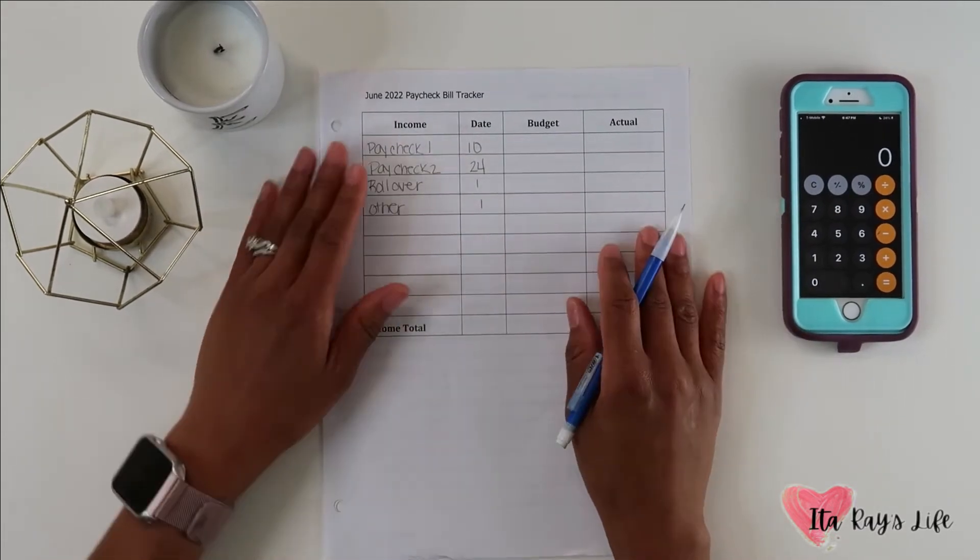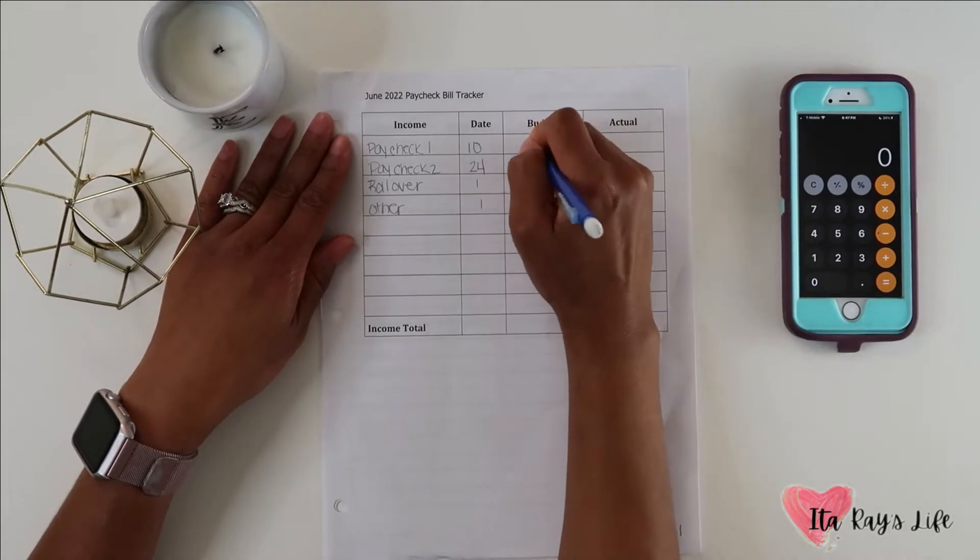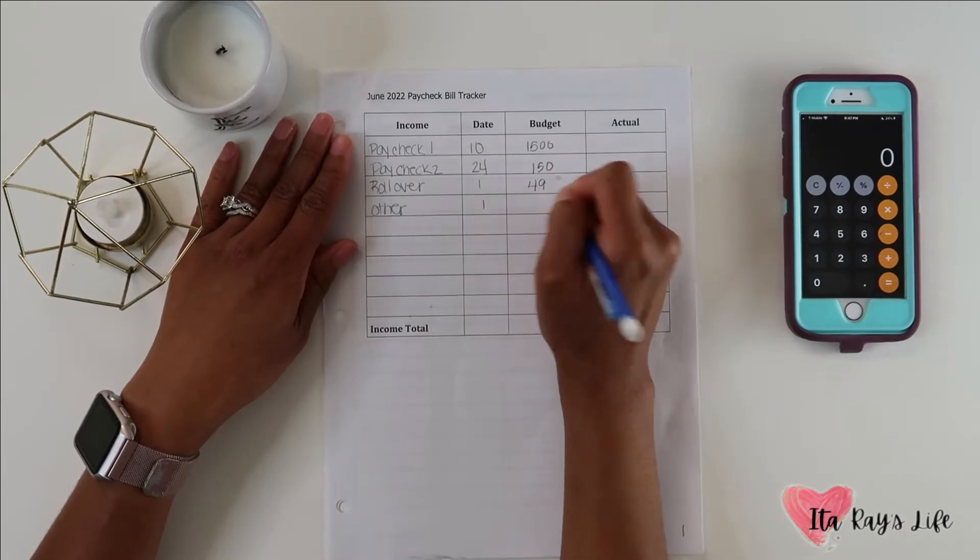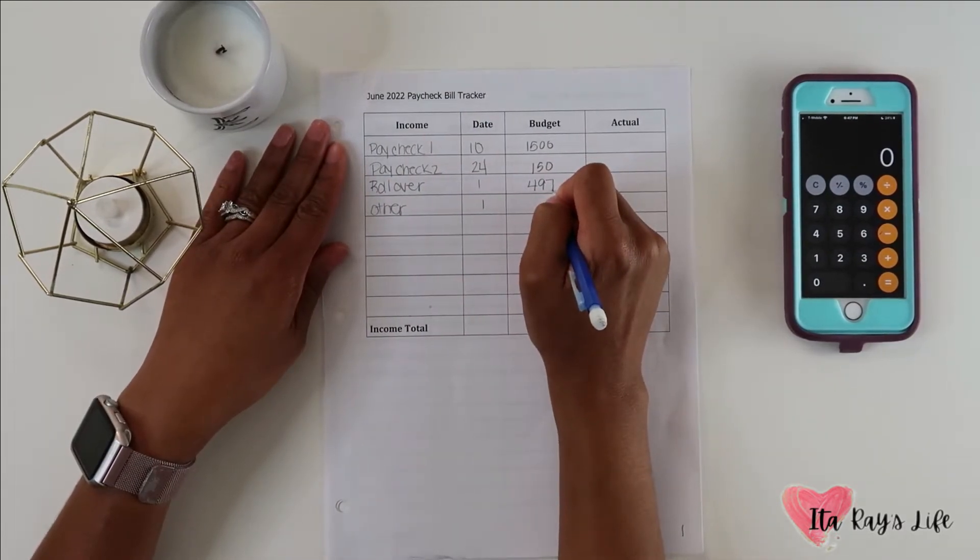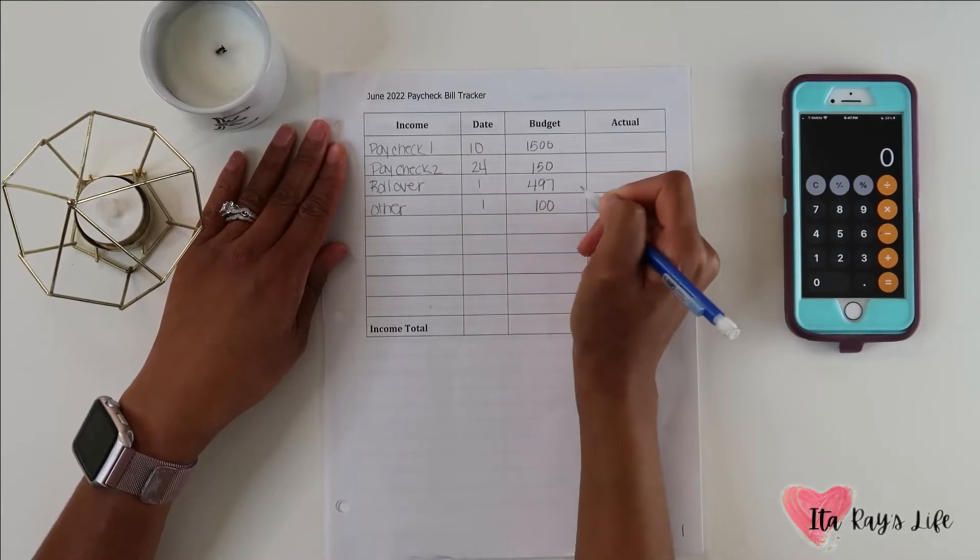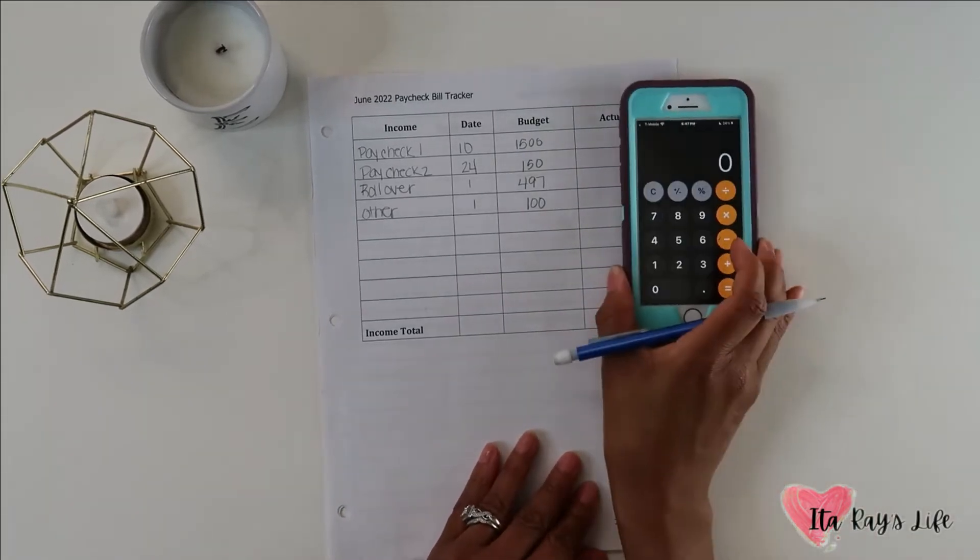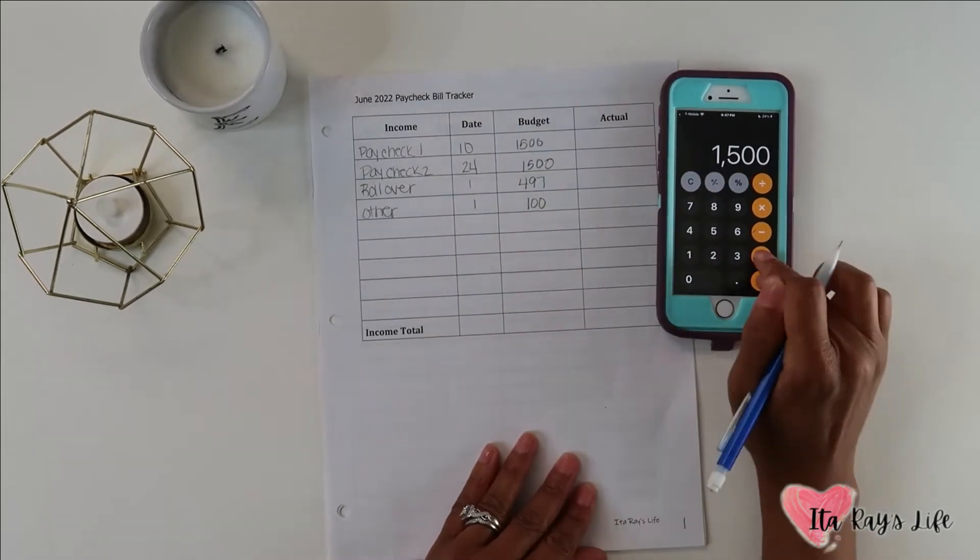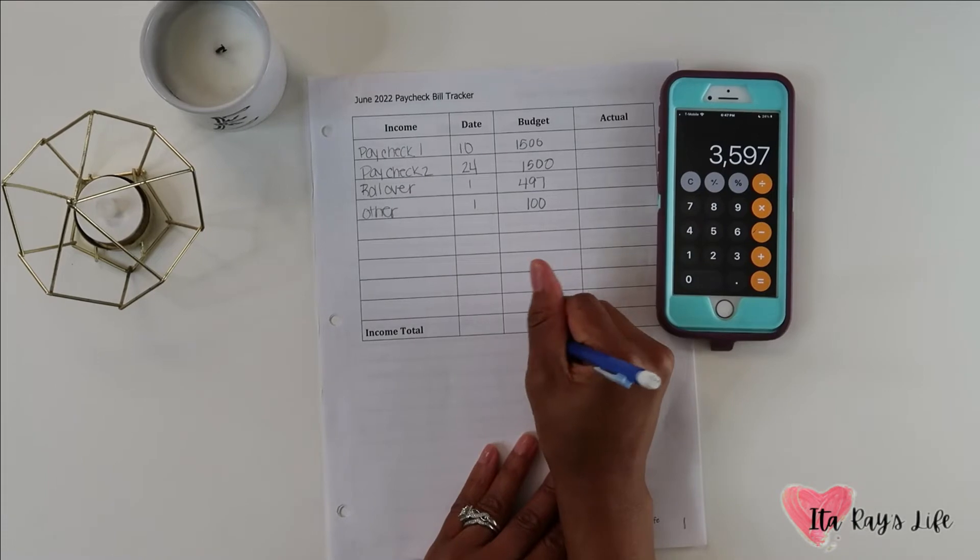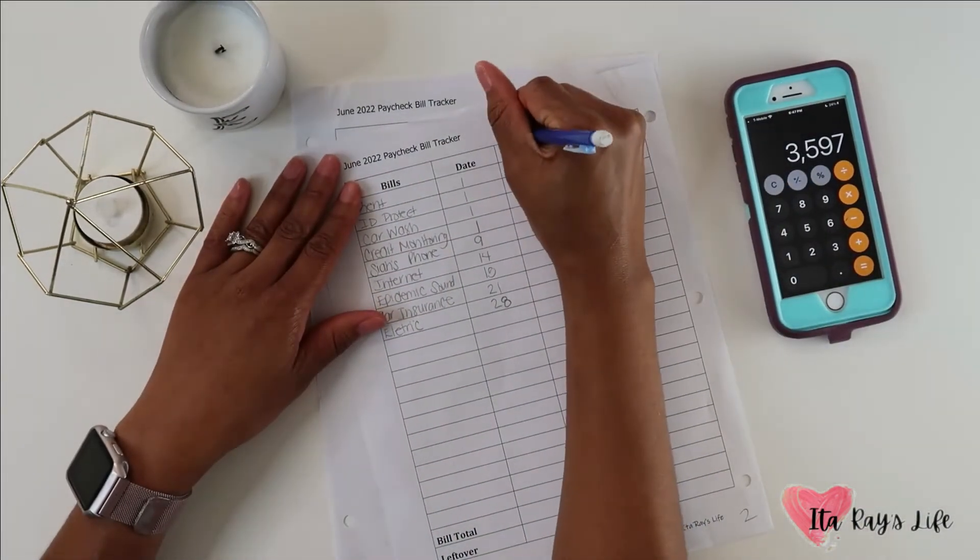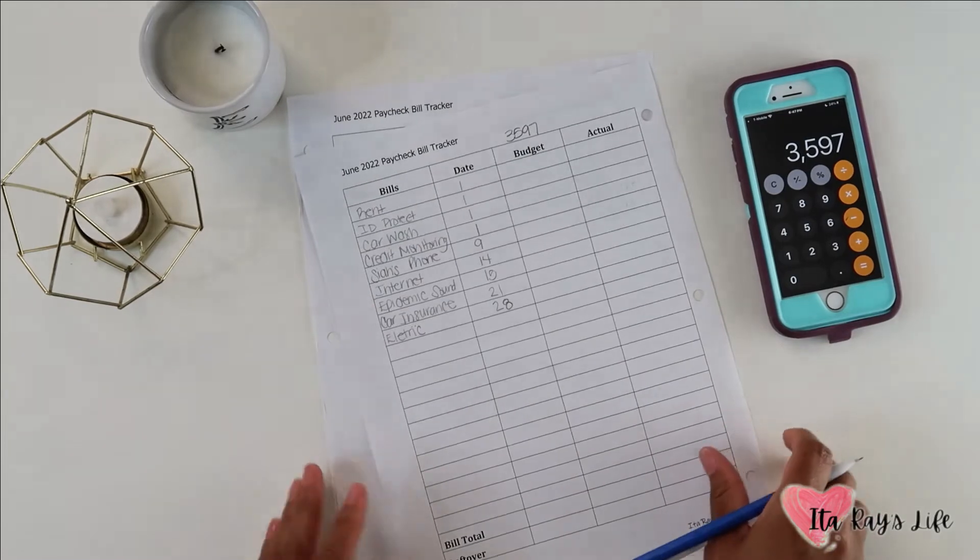For paycheck one and two I am going to budget $1,500. I did have a rollover from last month or May for $497. And other, I am expecting, I am hoping that I receive $100 from YouTube adsense. Let's add all of those up. That gives us a total of $3,597. We're going to take that $3,597 and budget it towards my bills.